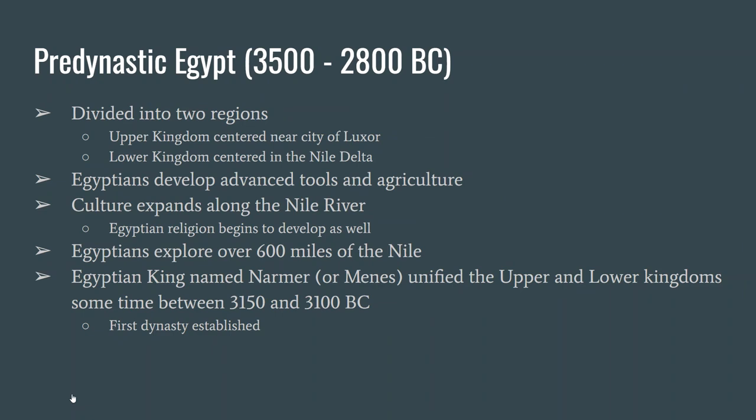During pre-dynastic Egypt, Egypt is divided into two different kingdoms: the upper kingdom and the lower kingdom. The upper kingdom is upriver — on the south part of Egypt. Just remember the Nile flows 'backwards.' At the city of Luxor, the lower kingdom is located where the Nile meets the Mediterranean Sea. During this time the Egyptians develop tool usage, learn how to irrigate and plant, and the basics of Egyptian culture — including religion — begin to develop.